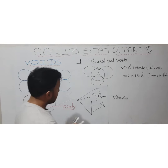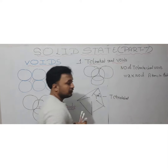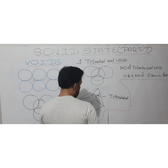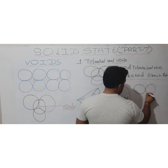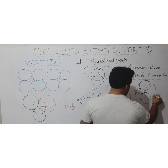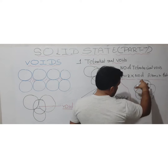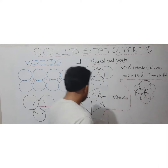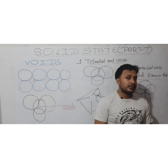Now we are going to discuss the second type of void. Suppose there are three spherical particles in the system, and one more spherical particle is added in the packing. In this case, the empty void is covered by 6 spheres — whereas in the tetrahedral void it was covered by 4 spheres.